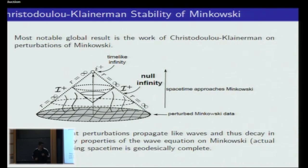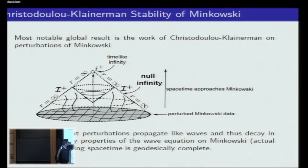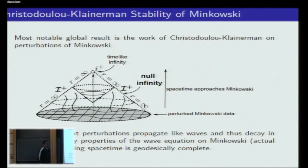Stability has not been done for black holes yet, but it has been done for the trivial Minkowski solution. If you consider trivial data and perturb the metric by epsilon away from the Euclidean metric with the second fundamental form also of order epsilon, then Christodoulou and Klainerman were able to show, about 25 years ago, that the resulting spacetime exists globally. The perturbations are compactly supported in space, with specific fall-off conditions at infinity.